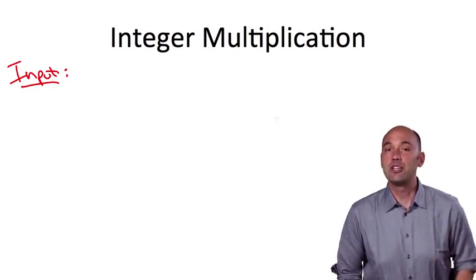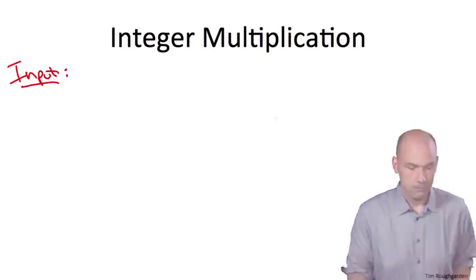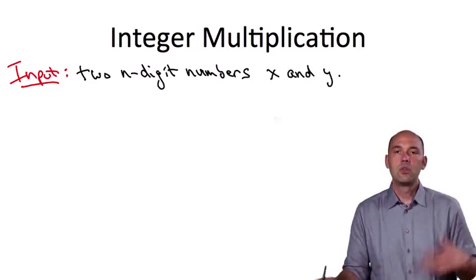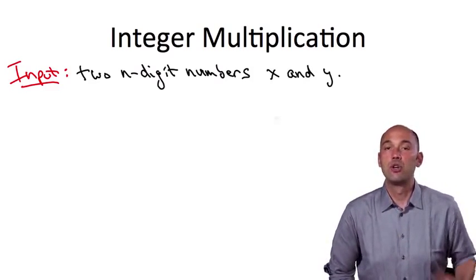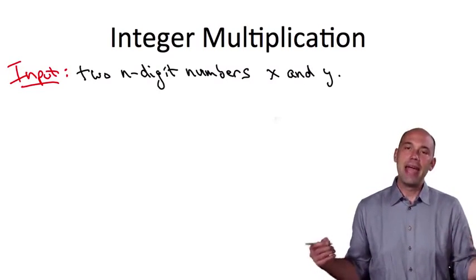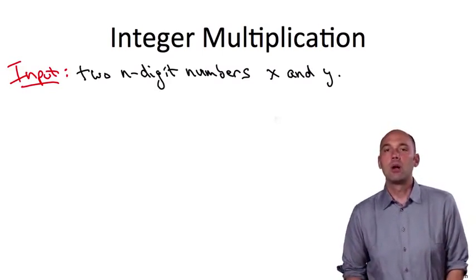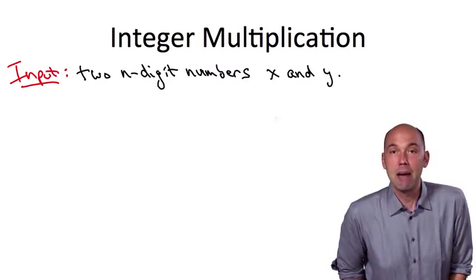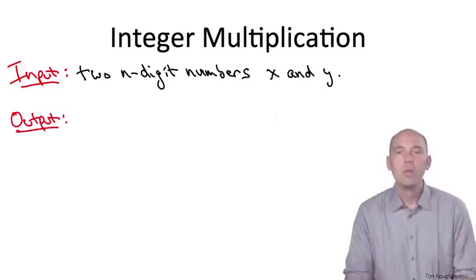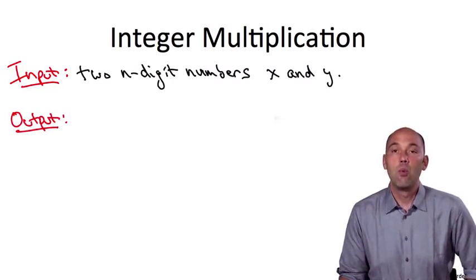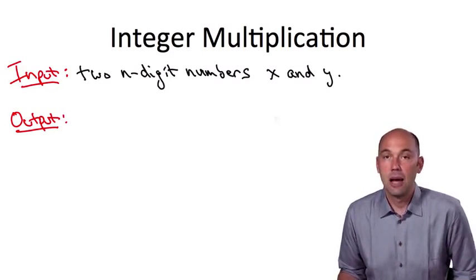For the integer multiplication problem, the input is just two n-digit numbers. The length n of the two input integers x and y could be anything, but for motivation you might want to think of n as large, in the thousands or more. Perhaps we're implementing some cryptographic application which has to manipulate very large numbers. The desired output is simply the product, x times y.